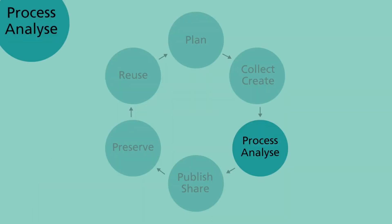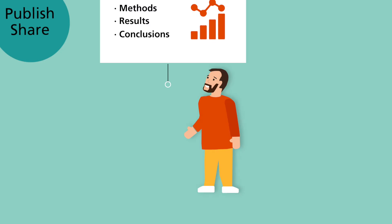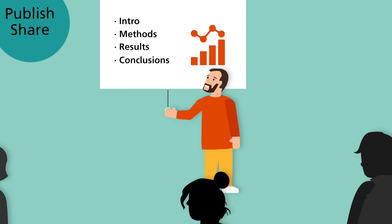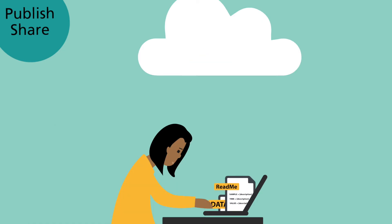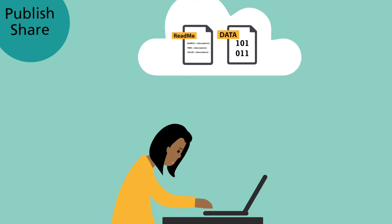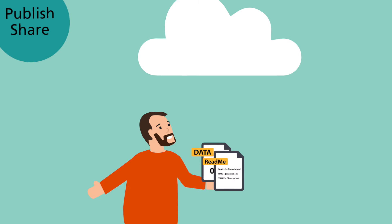Once you're done processing and analysing your data, you will start sharing your findings with the scientific community or the public. When researchers think about sharing research, they often think about sharing their results, for example in scientific journals, conference proceedings or books. But you can also publish your data along with relevant documentation in data journals or data repositories. This way, your data can be reused by others and properly understood, cited and licensed.